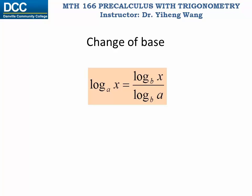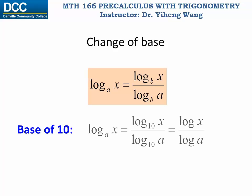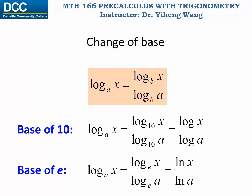When you apply the change of base formula, you can choose b to be any arbitrary base, as long as it's positive and not one. However, for convenience, we would like to choose the base of ten — therefore your arbitrary logarithmic expression log base a of x can be written as the quotient of two common logarithms: log x over log a. Or we can choose base e, the natural base constant, so the expression becomes the quotient of two natural logarithms: ln x over ln a. The reason is simple — most calculators only allow you to evaluate directly common logarithm or natural logarithm, so the change of base formula gives you a way to evaluate arbitrary logarithmic expressions.